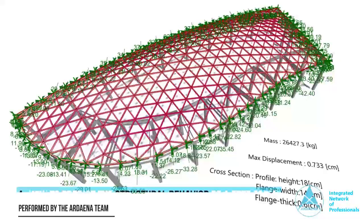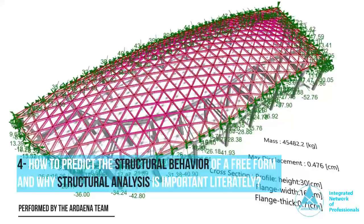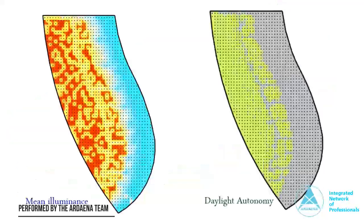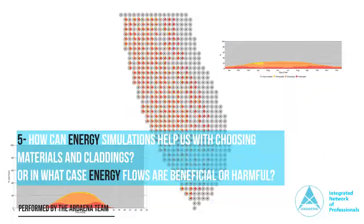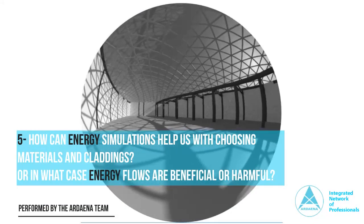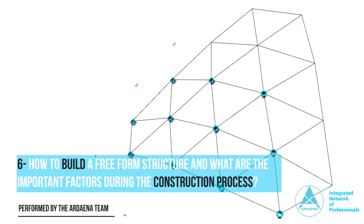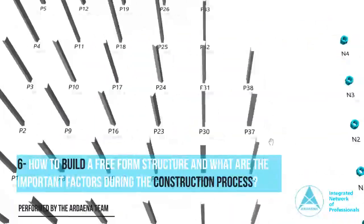4. How to predict the structural behavior of a freeform, and why is structural analysis important? 5. How can energy simulations help us with choosing materials and claddings, or in what cases are energy flows beneficial or harmful? 6. How to build a freeform structure and what are the important factors during the construction process?